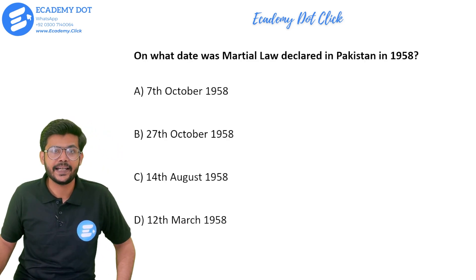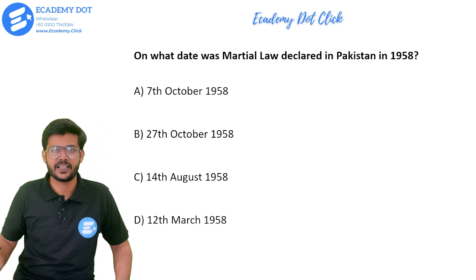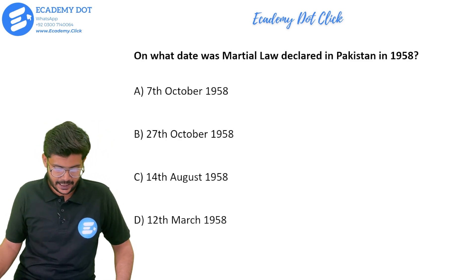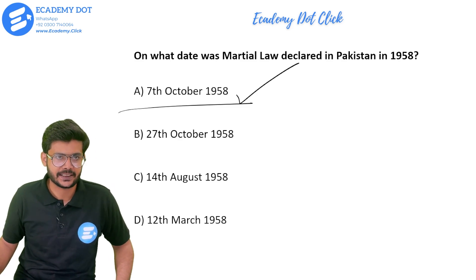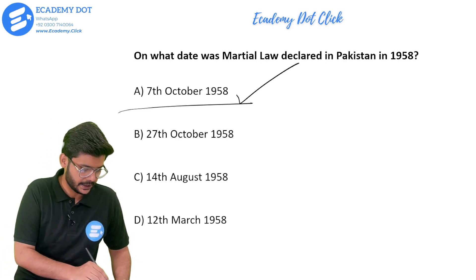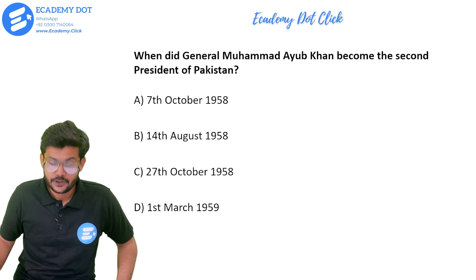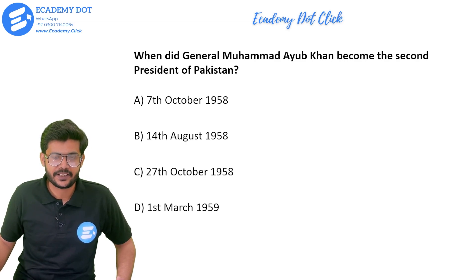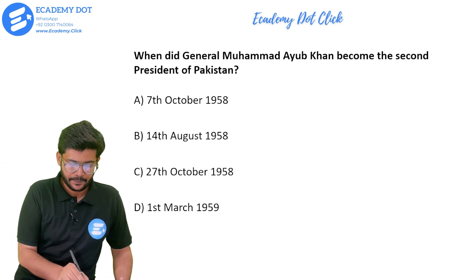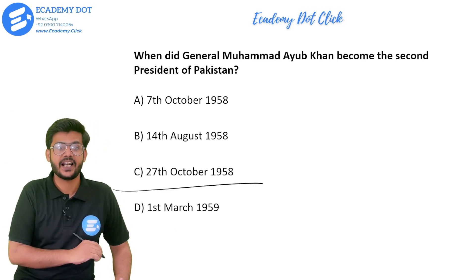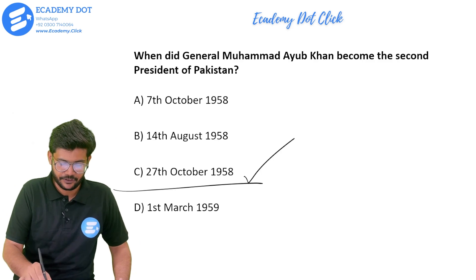On what day was Martial Law declared in Pakistan? On 7 October 1958. When did General Muhammad Ayub Khan, who was the Commander-in-Chief, become the second president of Pakistan? He became president after 20 days — on 27 October 1958.